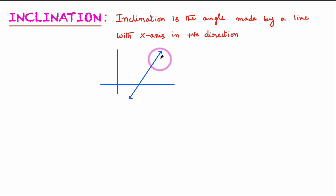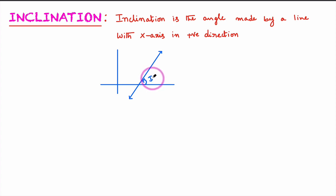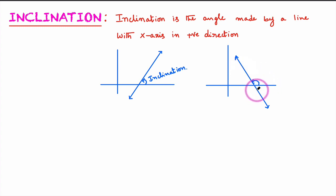Observe this diagram. This straight line — where is the angle made by this straight line with the x-axis in the positive direction? Positive direction means it is the anti-clockwise direction. This angle here is the angle made by the straight line with the x-axis in the positive direction, so this angle is known as inclination. In another example, this angle is again known as inclination.